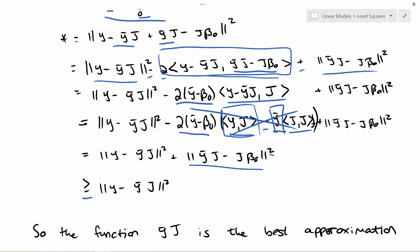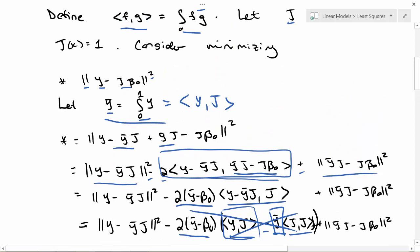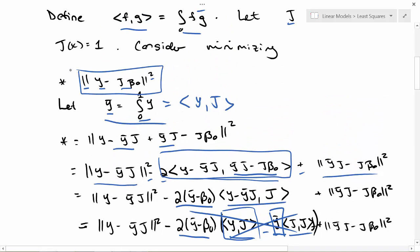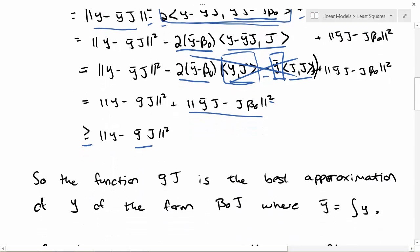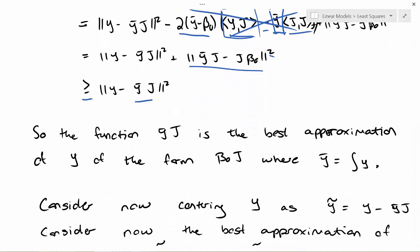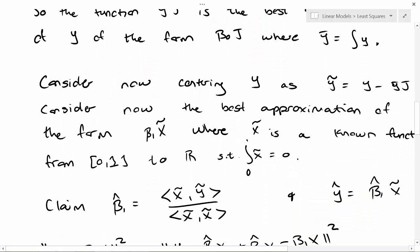the y bar j function is the unique minimizer of the least squares criteria. So if you have a function from [0,1] to R as your observed data point and you want to best approximate it as a horizontal function over that range, your best approximation is going to be the integral of your observed function.